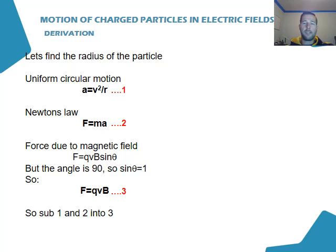We can actually find the radius of the path of the particle, knowing that the particle travels in circular motion, meaning we can use the principles of uniform circular motion. And we also know the force due to the magnetic field on the particle. So we can use the equation a = v²/r. Our second equation that we're going to use in this derivation is F = ma.